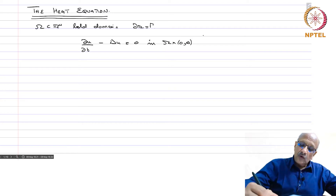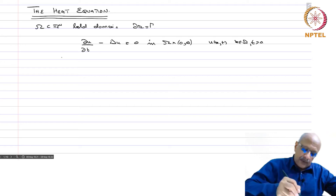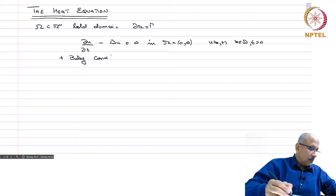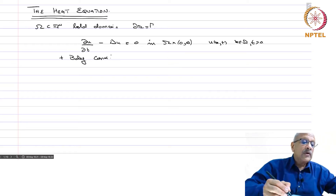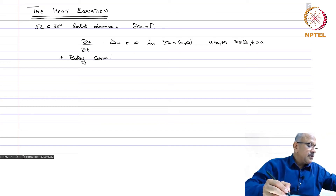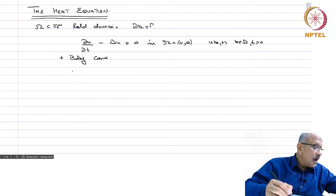Here omega refers to the spatial variable x, so u is a function of x and t, where x is in omega and t is positive, with appropriate boundary conditions. This heat equation, with variations thereof, occurs in several physical phenomena involving diffusion. It is the simplest example of a parabolic differential equation. In the case of the heat equation, u represents the temperature of a body as a function of x in omega and time t greater than 0.